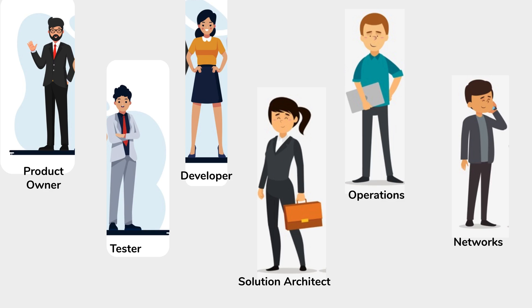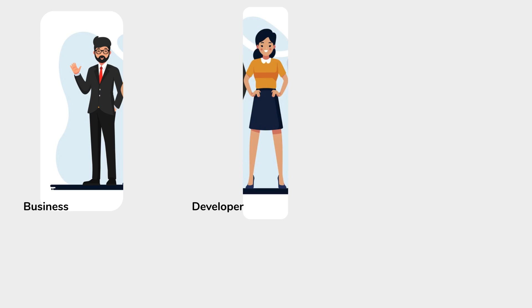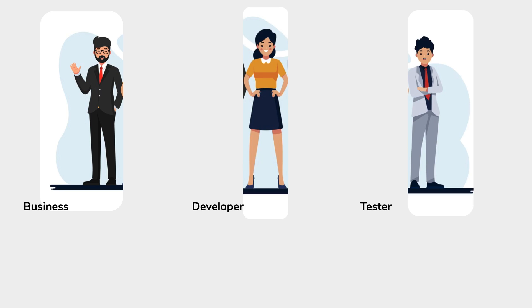Let us first start with the three amigos. In a BDD process, we call the three amigos a representative from the business team, who can be a business analyst or a product owner, then a representative from the development team, and a representative from the testing team.